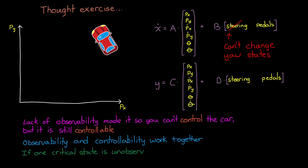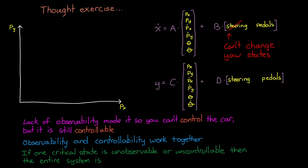If any one critical state is uncontrollable, then the entire system is deemed to be uncontrollable. And if any one critical state is unobservable, then the entire system is deemed to be unobservable.